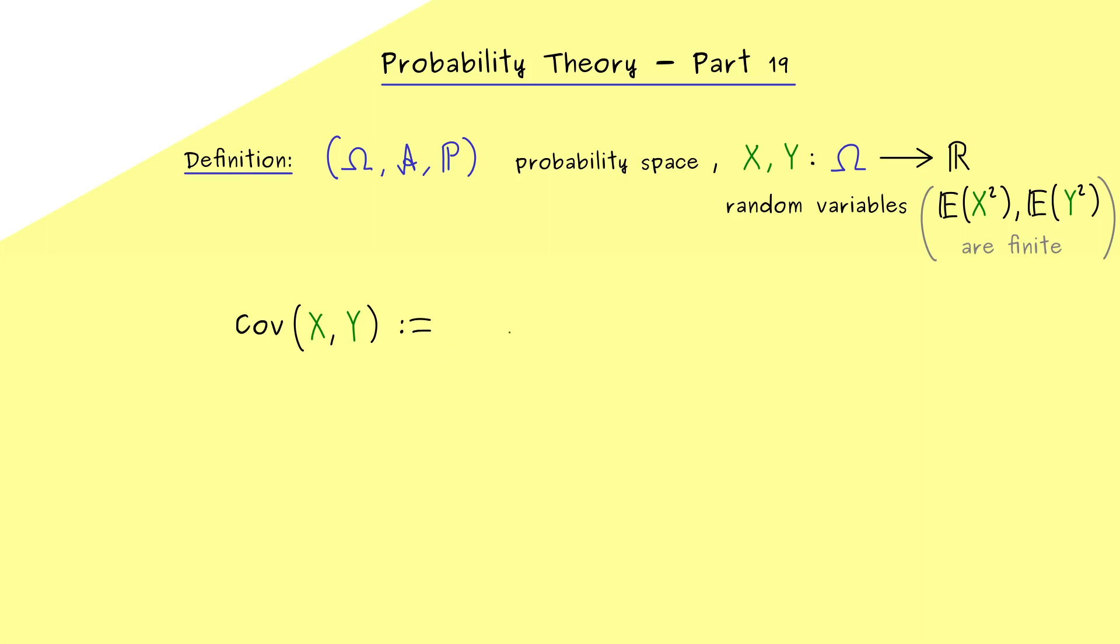First, we take the deviation of X to its average. So X minus expectation of X. And then we multiply this by the deviation of Y to its average. So the square you know from the variance is now a product of two different random variables.